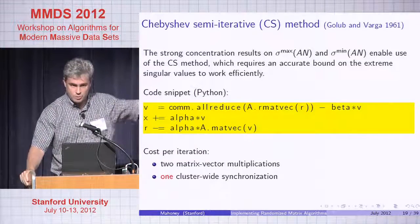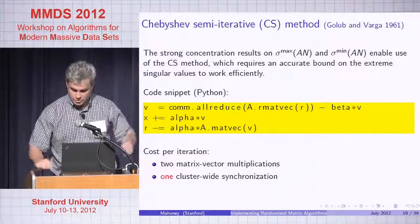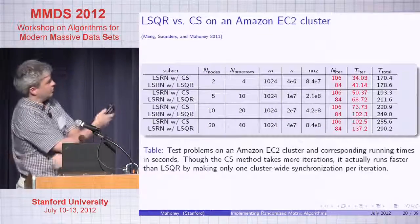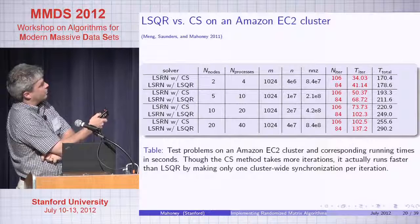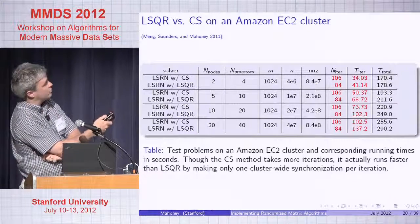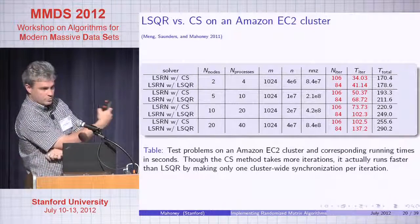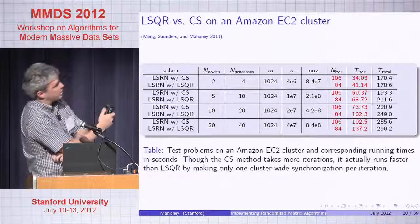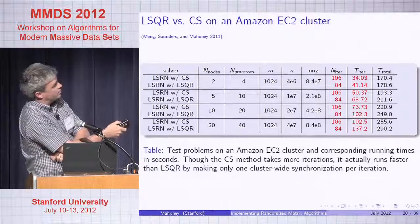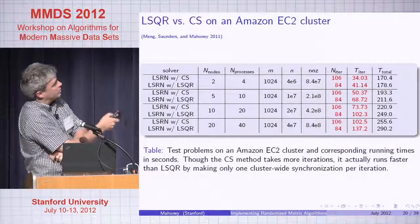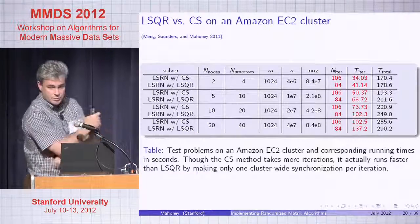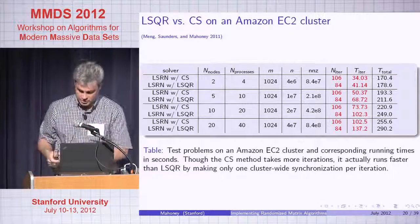The Chebyshev semi-iterative method has the same cost per iteration — two matrix-vector multiplications — but only one cluster-wide synchronization instead of two. We can take the fact that the Gaussian preprocessing at the front end guarantees a condition number of 6, and use the Chebyshev semi-iterative method. This works when the condition number is very good, which it rarely is in scientific computing problems — that's why people use conjugate gradient. With LSRN on Amazon EC2 with 2, 4, 8, 16, 32, 64 processors, the number of iterations is worse but the time per iteration is much better due to those communication properties.